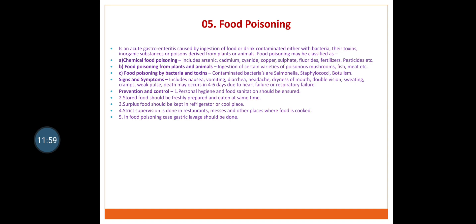Signs and symptoms of food poisoning include nausea, vomiting, diarrhea, headache, dryness of mouth, double vision, sweating, cramps, weak pulse; death may occur in 4–6 days due to heart failure or respiratory failure. Prevention and control: personal hygiene and food sanitation should be ensured; food should be freshly prepared and eaten at the same time; surplus food should be kept in a refrigerator or cool place; strict supervision in restaurants and places where food is cooked; in food poisoning cases, gastric lavage should be done.